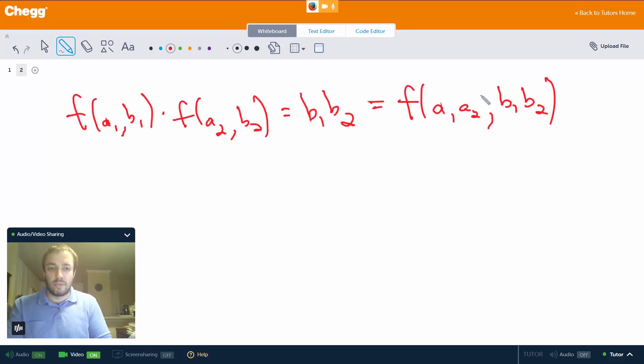Because remember, this function f sends this point to the second coordinate in Z, so b₁b₂. And again, it doesn't actually matter what the first coordinate is, but in particular it is true when our first coordinate is a₁ × a₂. So this shows that this does in fact equal this.